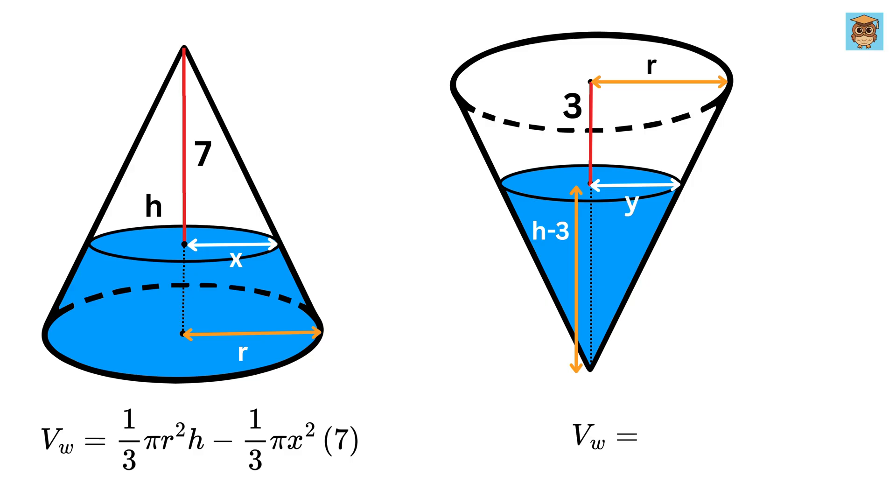Thus, the volume of water in this flipped cone will be 1 by 3 times pi times Y squared times H minus 3.